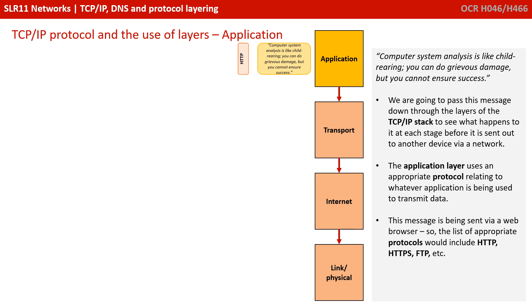We're going to demystify this process and see what happens when we try to send the message at the top of the screen. We pass this message down through the layers of the TCP/IP stack to see what happens at each stage before it's sent to another device via the network. The application layer is hit first, and it uses an appropriate protocol relating to whatever application is being used to transmit the data. This message is being sent via the web browser, so the appropriate protocols include HTTP, HTTPS, or FTP — here we're using HTTP — so it adds a header onto the message.